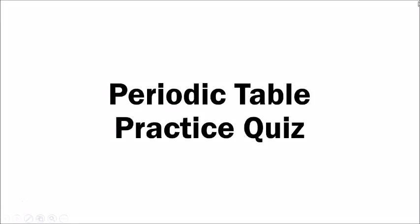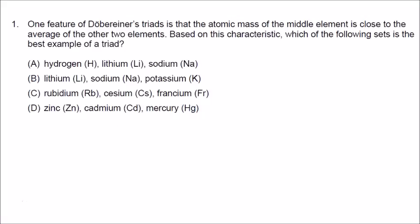These are the answers to the Periodic Table Practice Quiz. Number one: one feature of Döbereiner's triads is that the atomic mass of the middle element is close to the average of the other two elements. Based on this characteristic, which of the following sets is the best example of a triad?